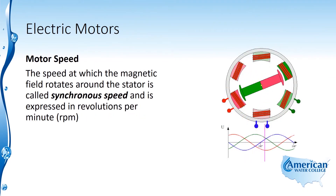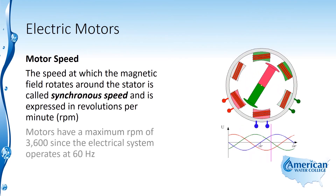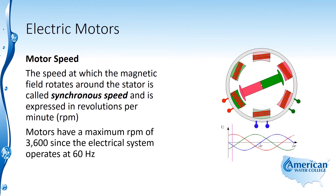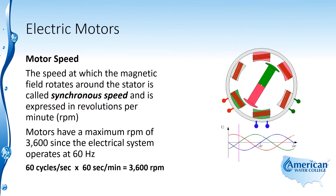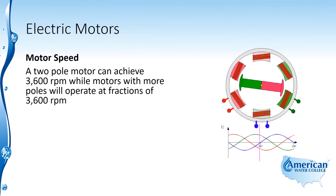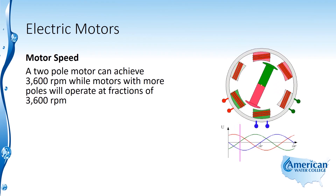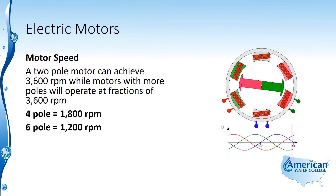The speed at which the magnetic field rotates around the stator is called synchronous speed, expressed in revolutions per minute, or RPM. Motors have a maximum RPM of 3600, since the electrical system operates at 60 Hertz — 60 cycles per second times 60 seconds per minute equals 3600 RPM. A two-pole motor can achieve 3600 RPM, while motors with more poles operate at fractions of 3600 RPM. For example, a four-pole motor operates at 1800 RPM, and a six-pole motor operates at 1200 RPM.